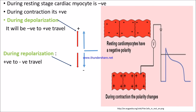Let's see some basics of cardiac myocytes. When the cardiac myocyte is in a resting state it is always negative; when contracting it has positive polarity. During depolarization the polarity travels from negative to positive, denoting ventricular or atrial depolarization. During repolarization the polarity goes from positive to negative. These basics are always helpful for ECG diagnosis.